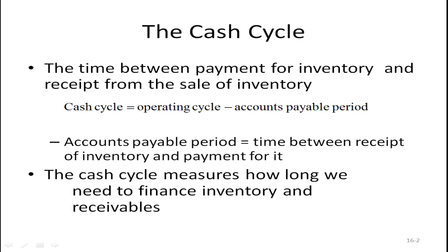The cash cycle is the time between the payment for inventory and the receipt from the sale of the inventory — essentially, how long do you have to finance this inventory? It is defined as the operating cycle minus the accounts payable period. The accounts payable period is how long your supplier allows you before you have to pay them — the time between the receipt of inventory and the payment for it. So the cash cycle measures how long we need to finance inventory and receivables.